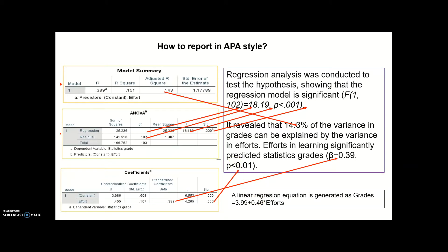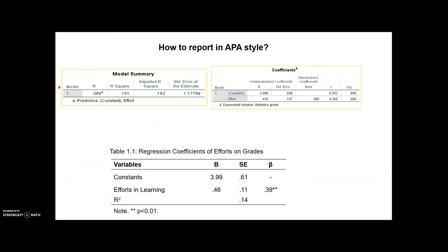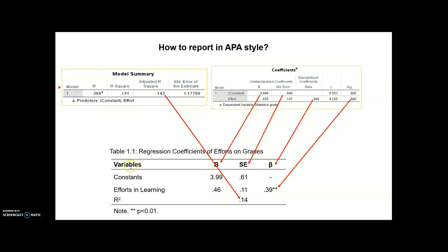You can also provide the regression equation for the linear model: Grades = 3.99 + 0.46 × Efforts. The constant 3.99 comes from the constant row in the coefficients table, and 0.46 comes from the effort coefficient. For your own research, you can also include a regression table with variable names, unstandardized coefficients, standard errors, and standardized beta values, along with asterisks and notes below the table.